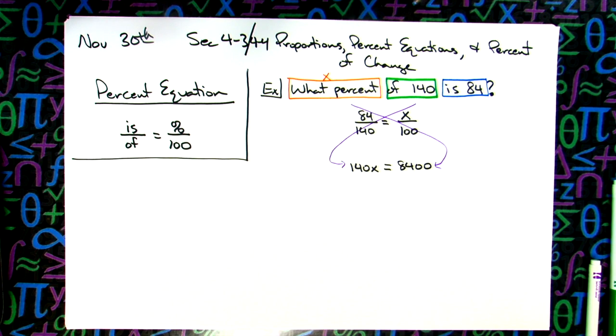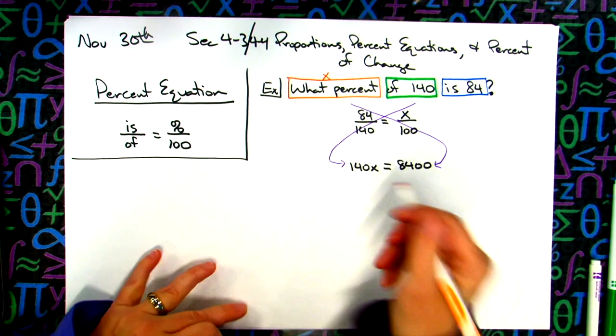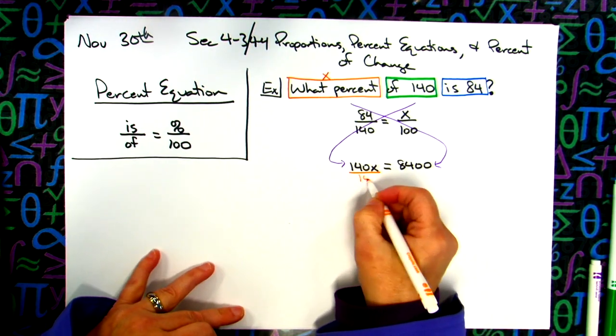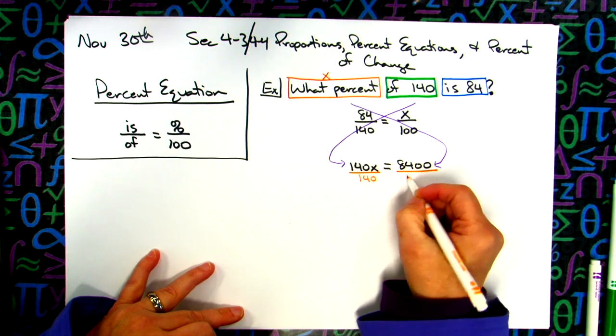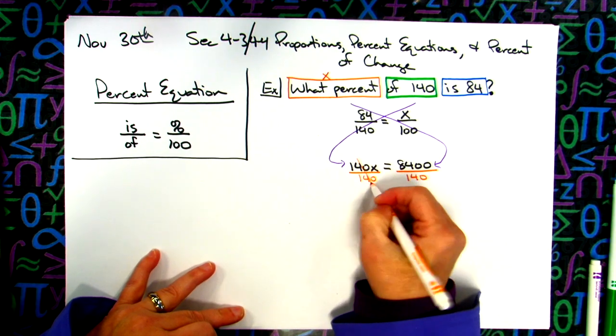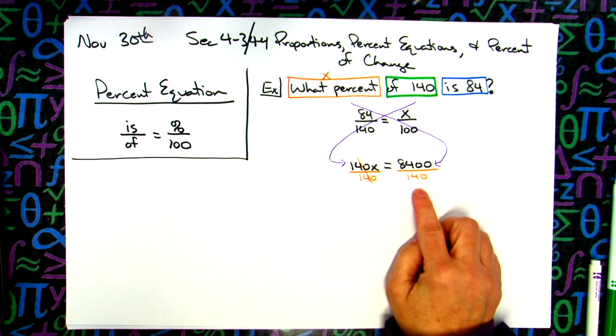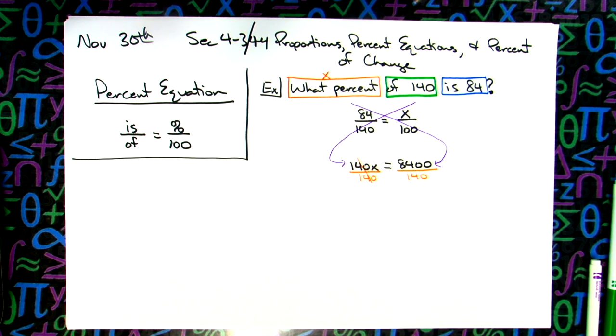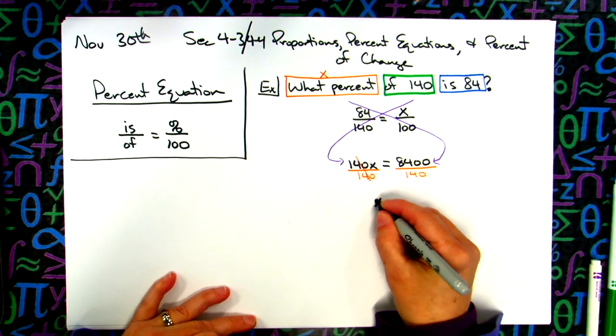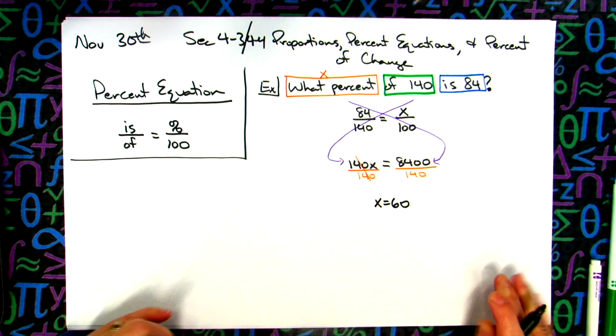When you get to there, every time when you cross multiply down with a proportion you get a one step equation, in which case we divide both sides by 140. The 140s cross out. I'm assuming you are going to use your calculator on that, so 8400 divided by 140 is going to give you 60. We get x equals 60.